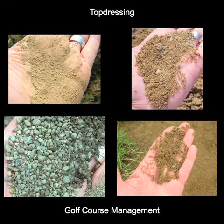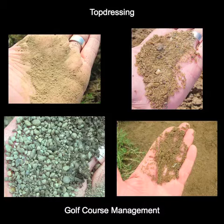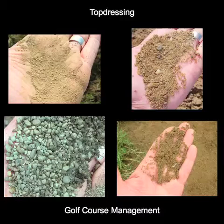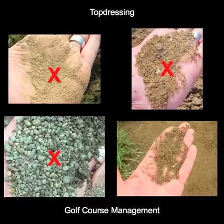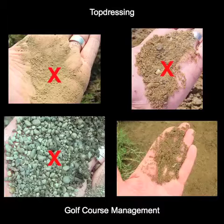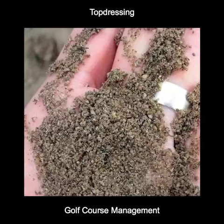Finding a good local sand supplier is the key to a good top dressing program. It is also important to get to know the materials and what they look like. Looking at these four materials, which do you think is uniform coarse medium sand? This one is predominantly silt and clay. The one in the top right hand corner contains a little bit of gravel. The one in the bottom left hand corner contains too much gravel — it is all gravel. The sand in the bottom right is the uniform medium coarse sand. Once you are familiar with what uniform medium coarse sand looks like and feels like, it makes quality control of top dressing products much easier.